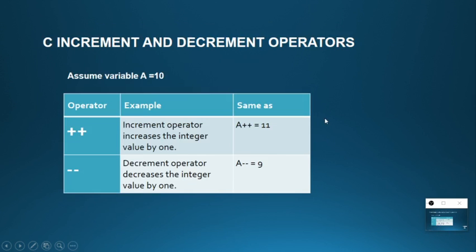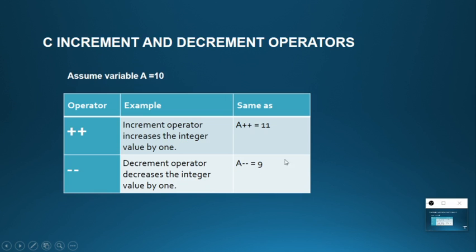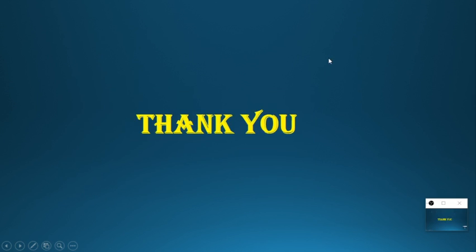Coming to the increment and decrement operator, which is also called the unary operator. For example, if A equals 10, then A++ means A = A + 1, which gives 11. A-- means A = A - 1, which gives 9. Thank you, keep practicing.